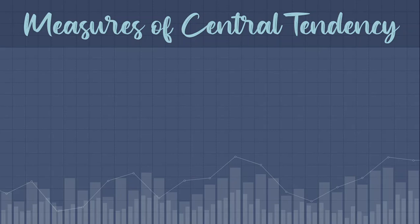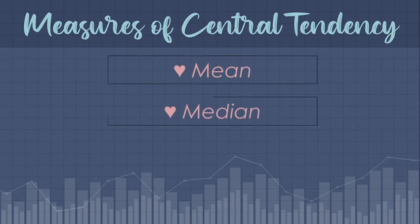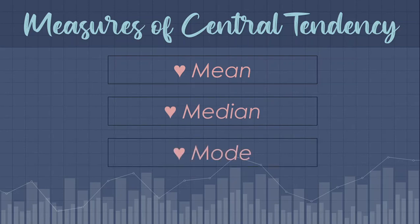The measures of central tendency are the mean, median, and mode. A measure of central tendency is a single value that attempts to describe a set of data by identifying the central position within that set of data.